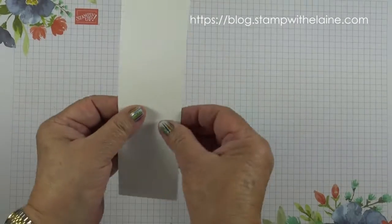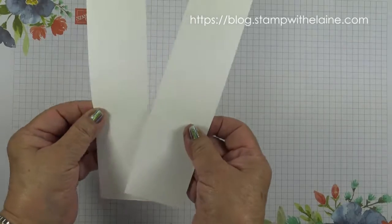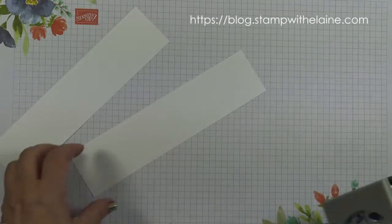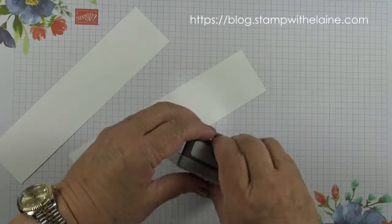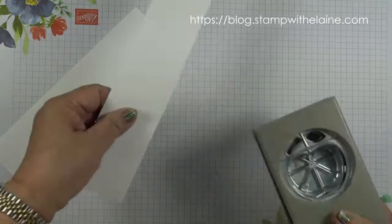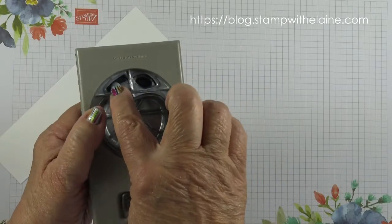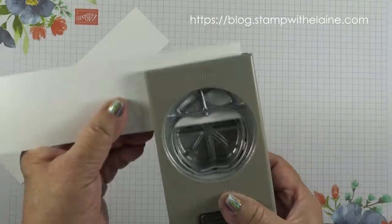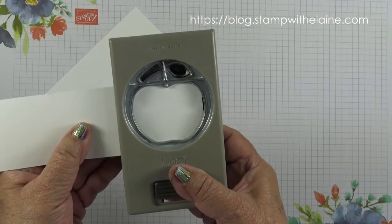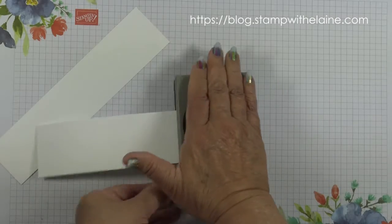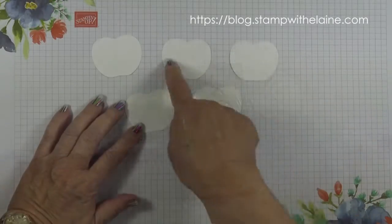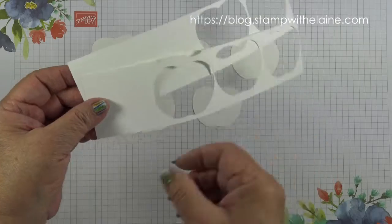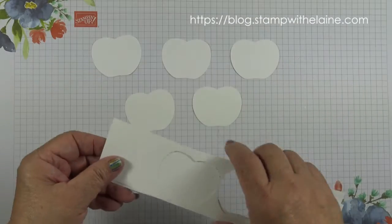I cut two inch strips of whisper white by the width of an A4 sheet so that when you're punching out the apple I don't have to punch out the leaf and the stem and then it just fits into the punch. You need to punch out five and then out of this strip you've got some leftover to do your sentiment.